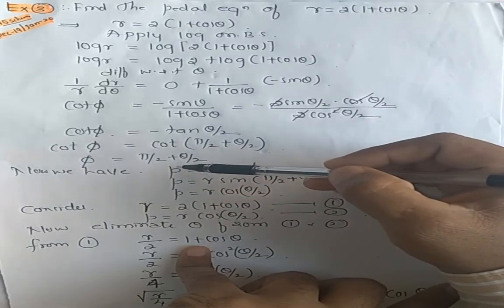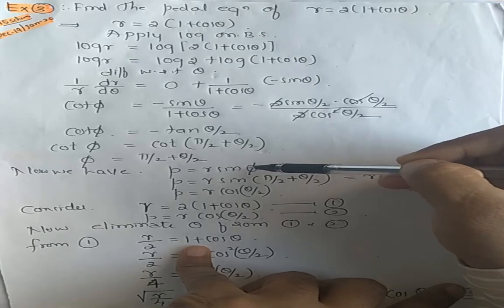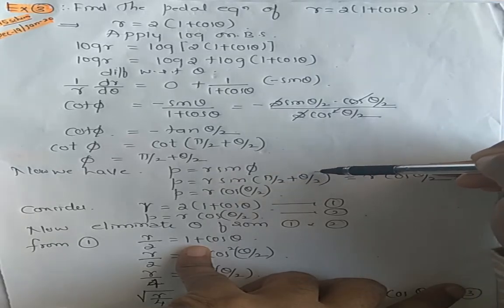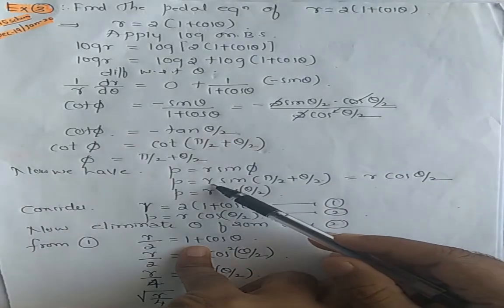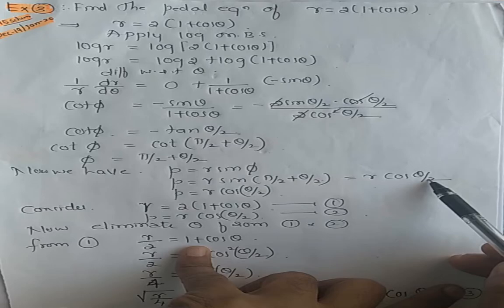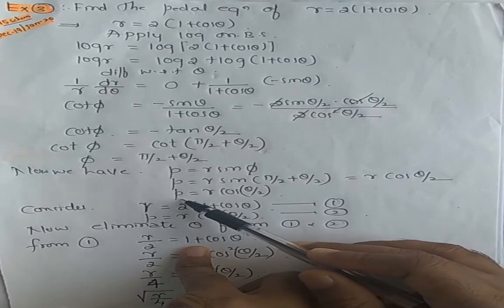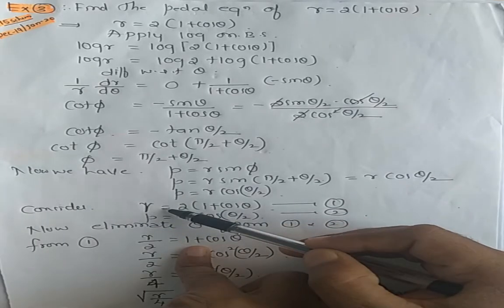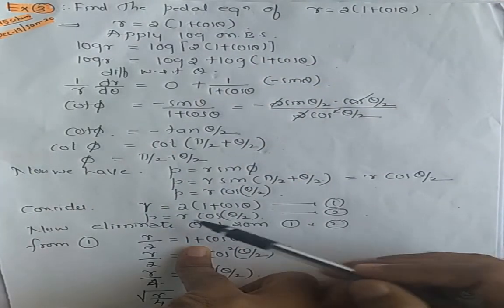After getting this phi, now we have to take the pedal equation p equals r sine phi. Substitute phi value, so r as it is, sine as it is, phi is 90 plus theta by 2. As we know, r sine of 90 plus theta is cos theta by 2. So you got r cos theta by 2. R cos theta by 2 is p.